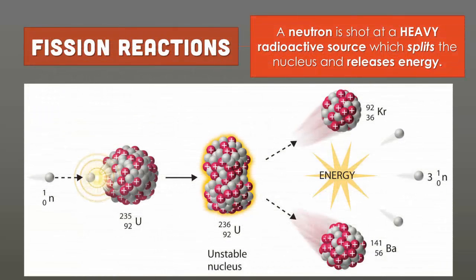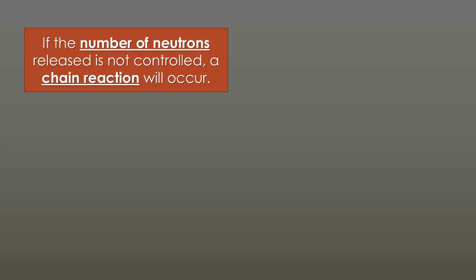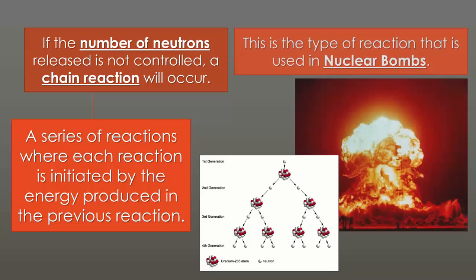In a fission reaction, you have a neutron, and it is shot at a heavy radioactive source. When we say heavy, that means its mass number is big. In this example, we use uranium-235. When that neutron hits the uranium-235, it splits, and it splits into krypton and barium, and in the process it releases a tremendous amount of energy. The biggest thing to take from this is that large mass breaks up into two or more smaller masses. If the number of neutrons released is not controlled, we have what we call a chain reaction. When we talk about atomic bombs, this is the type of reaction that we use in nuclear bombs. It's an unstable chain reaction of energy production. The chain only ends when there's no more fissionable material left.